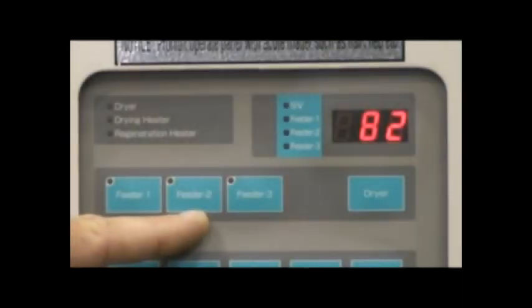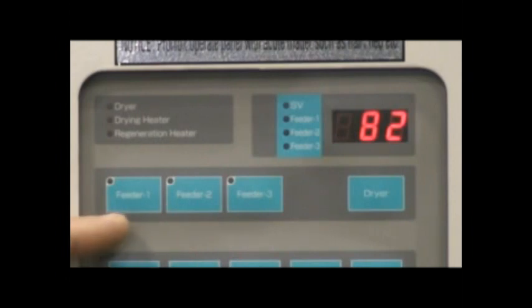Feeder buttons 1, 2, and 3 will turn on the conveying portion of the unit. Feeder 1 is for the main drying hopper, while feeder 2 and 3 will convey to the injection machines. On each MJ3 unit, feeders 1 and 2 are standard and feeder 3 is an option.